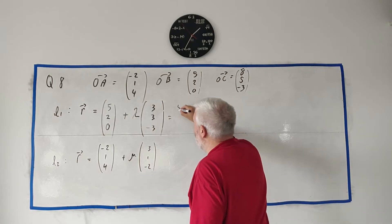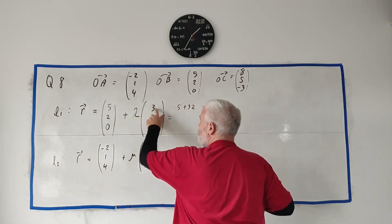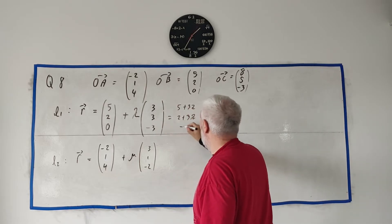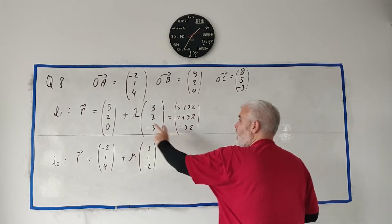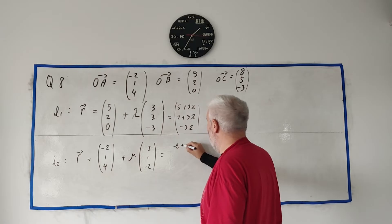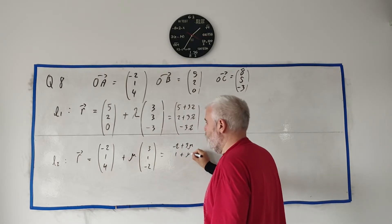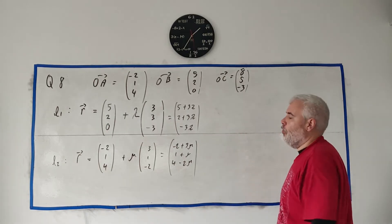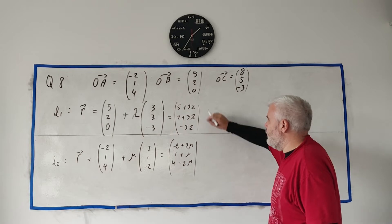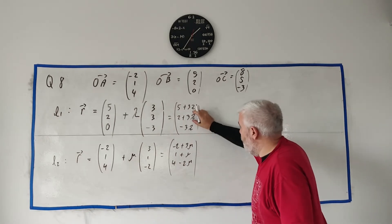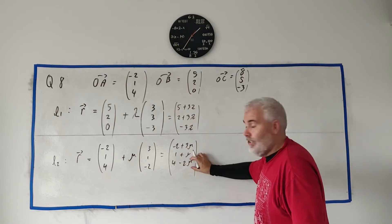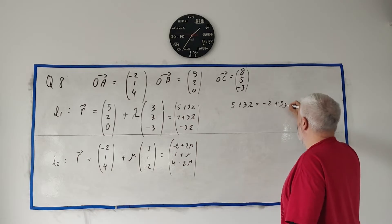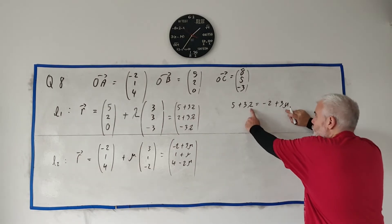So how do you do that? We simply put this equal to this, just like we do in coordinate geometry in two dimensions. This line equals this line, find out when they agree. We can do that a little easier by cleaning this up. Instead of writing it like this, we can also write this as 5 plus 3 lambda, 2 plus 3 lambda, and 0 minus 3 lambda. So that's the vector of every point on line 1. And doing the same here, we get minus 2 plus 3 mu, 1 plus mu, and 4 minus 2 mu.